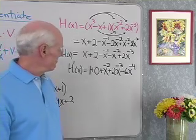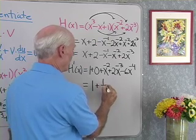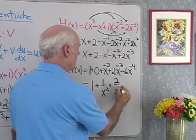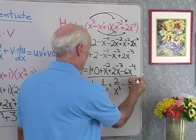So that's the derivative. We could simplify it a little bit, I guess. How about if we write it this way? 1 + 1/x² + 2/x³ - 6/x⁴. Maybe that's one way to write it.